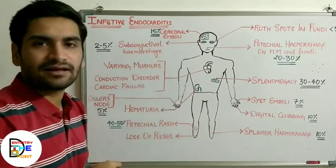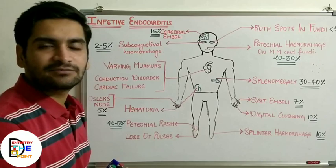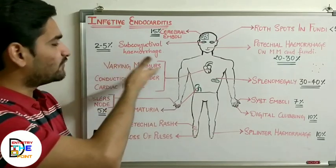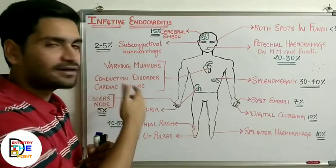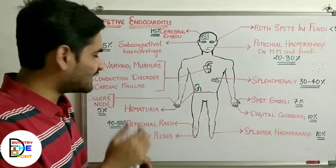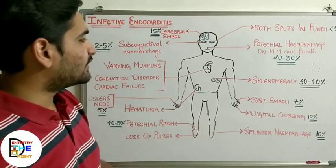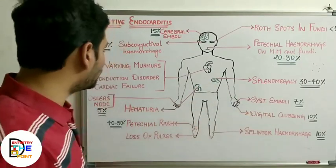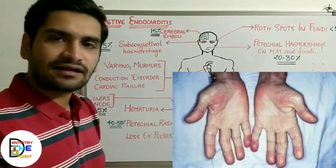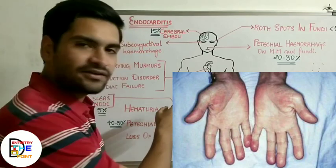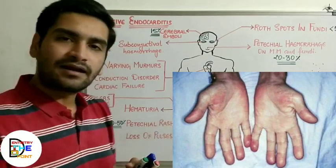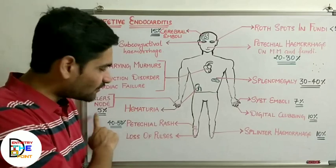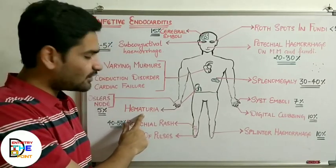Petechial hemorrhage is also seen on the mucous membrane of the oral cavity and on the fundi. Subconjunctival hemorrhage is noted. Regarding the central nervous system, cerebral emboli are seen in 15% of cases. Regarding the cardiovascular system, varying cardiac murmurs, conduction disorders, and cardiac failure are the most common signs. Regarding the spleen, 30–40% of cases show splenomegaly. Osler's nodes are reddish-purple lumps at the fingertips, seen in 5% of cases.